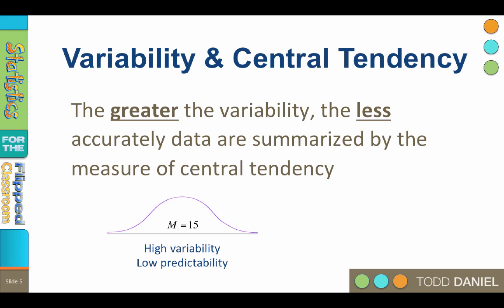The greater the variability, the less accurately a measure of central tendency summarizes the distribution. Predictions are less precise. Measurement error is larger. The mean is not as useful. But when the data are consistent with the mean, those data are predictable, stable, and representative. Low variability equals high predictability and high consistency.